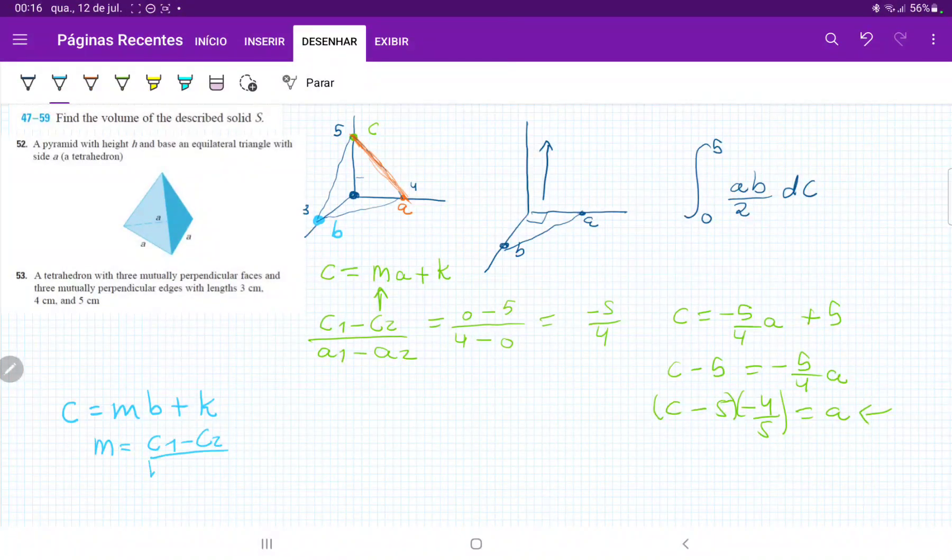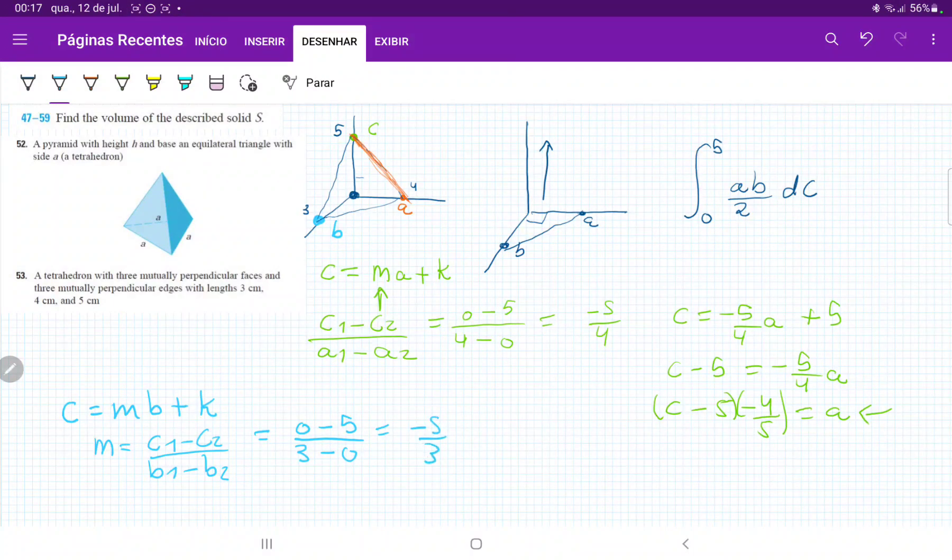In this case, the slope M is equal to C1 minus C2 over B1 minus B2. So considering that this point here is our point 2 and that's our point 1, C1 at this point is 0, so 0 minus C2 is going to be 5 over B1 is going to be 3, so B3 minus B2 at this point is 0. So we're going to get here that the slope is minus 5 over 3.